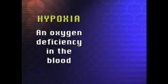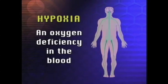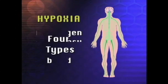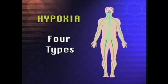Hypoxia is an oxygen deficiency in the blood and affects every cell, especially the brain and nervous system. There are four types of hypoxia.